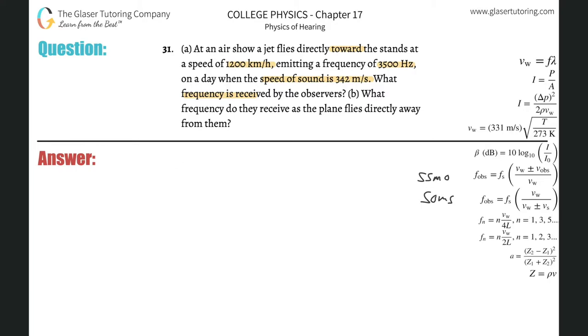Frequency of the observer equals frequency of the source multiplied by the velocity of sound divided by the velocity of sound plus or minus the velocity of the source. When it's moving toward the object, the frequency should be going up, so we're doing a subtraction in the bottom. This is the equation toward.